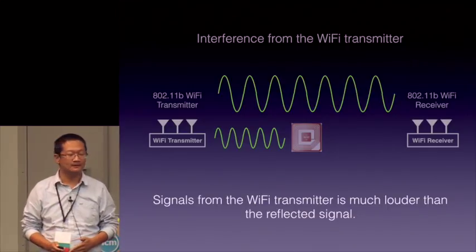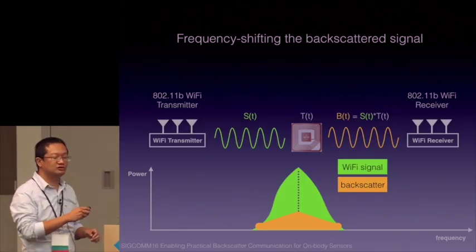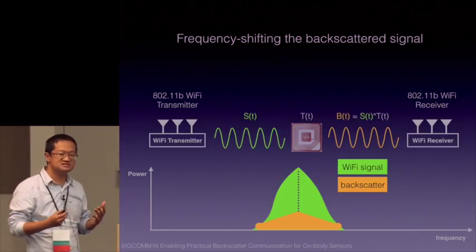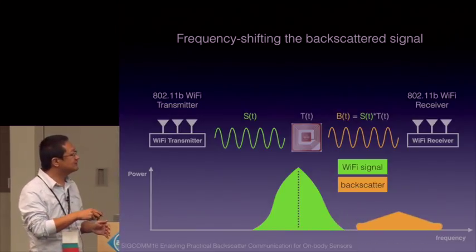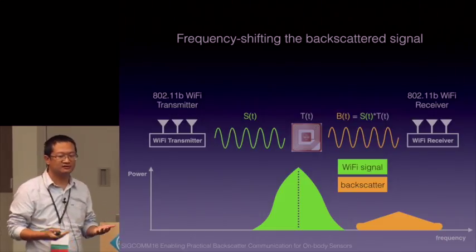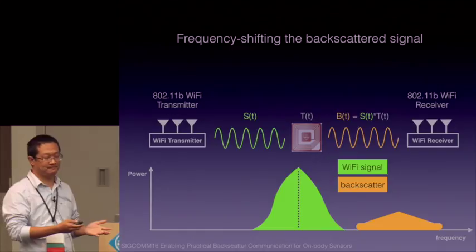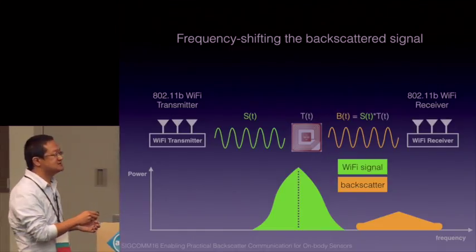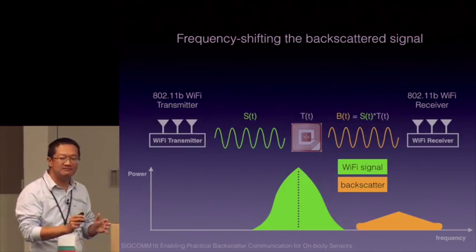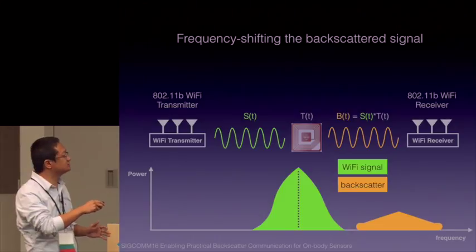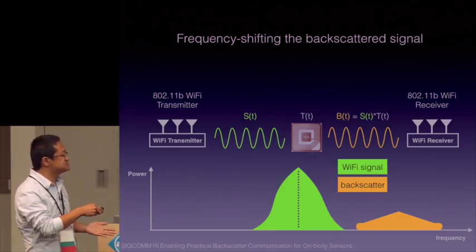How to solve this problem? There is one paper published in SIGCOMM this year. The idea is that the backscatter signal cannot be decoded because it shares the same spectrum as the incoming Wi-Fi signal. As long as the tag can perform some operation that moves the backscatter signal away from the incoming Wi-Fi signal, the receiver can decode the backscatter signal without interference. Such operation can be done by generating a special signal on the tag, because the backscatter signal B is the time-domain product between the incoming Wi-Fi signal S and the tag local signal T. When you increase the frequency of the tag local signal, you can move the backscatter signal away from the incoming signal.